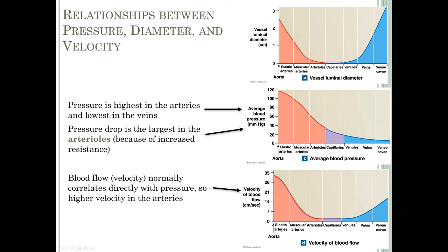The notice on the pressure graph is that by the time blood reaches the capillaries, there are no more pressure fluctuations. Systolic pressure is the pressure in the arteries during ventricular systole — the peaks. Diastolic pressure is during ventricular diastole — the troughs. Normal blood pressure is 120/80: systolic 120, diastolic 80. Pulse pressure is the difference between systolic and diastolic pressure, and it's used to calculate mean arterial pressure.